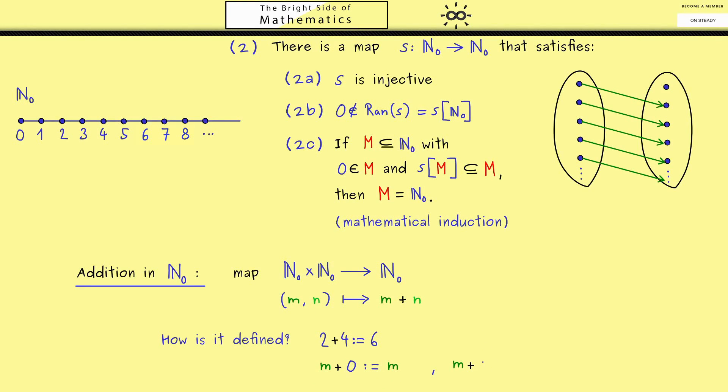However, we still have infinitely many left because we have two sides here. Therefore let's continue and look at m + 1. Looking at the number line, adding 1 just means we jump to the next number in order, so we jump to the successor of m. Or in other words, we can use the map s here and define m + 1 as s(m).